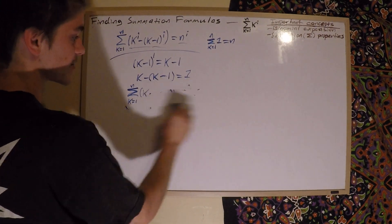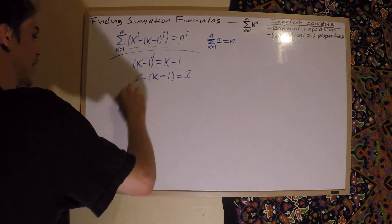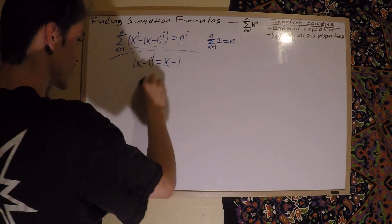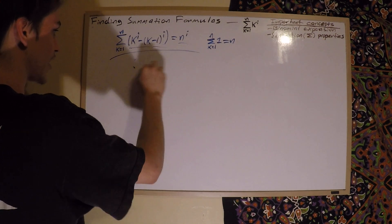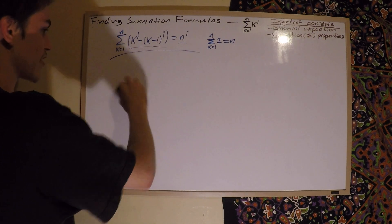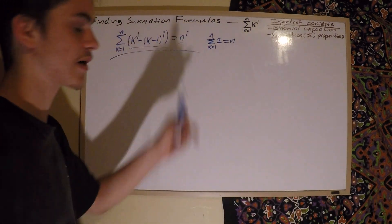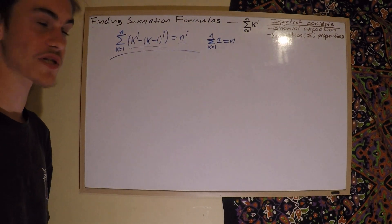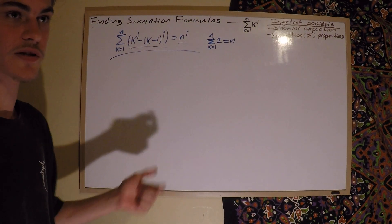This is just a method of finding any power — k raised to the i-th power. In this case, we found the sum of k to the power of 0, which equals n.